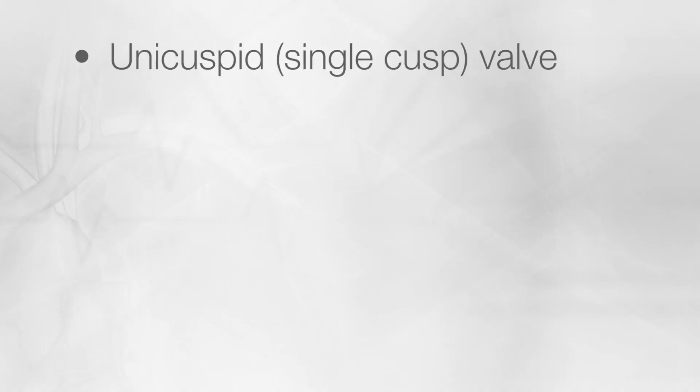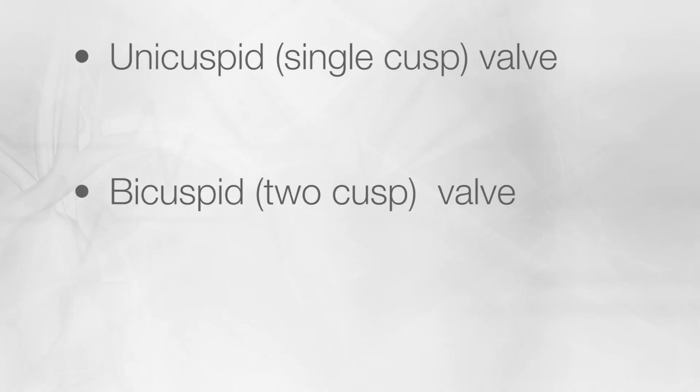Individuals with a normal tri-leaflet valve typically don't experience significant narrowing until their 70s or 80s. By contrast, individuals with a congenitally abnormal valve — meaning a unicuspid or single-cusp valve, or a bicuspid, a two-cusp valve — these patients frequently will suffer significant narrowing of the valve earlier in life. For instance, those with bicuspid valves may suffer from significant narrowing in their 50s or 60s.